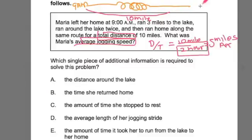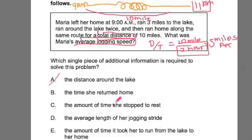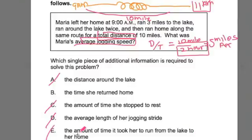When you read this over again, you realize that it doesn't tell you a return time — it doesn't say that she got back home at 11am. And if it did, then we could do these calculations and divide total distance by the total time to get the average speed. So what we're missing here isn't the distance around the lake — that's not really important. And it's not the average length of her jogging stride, nor the amount of time she stopped to rest, nor the time it took her to run from the lake to her home. It's all about the time she returned home.